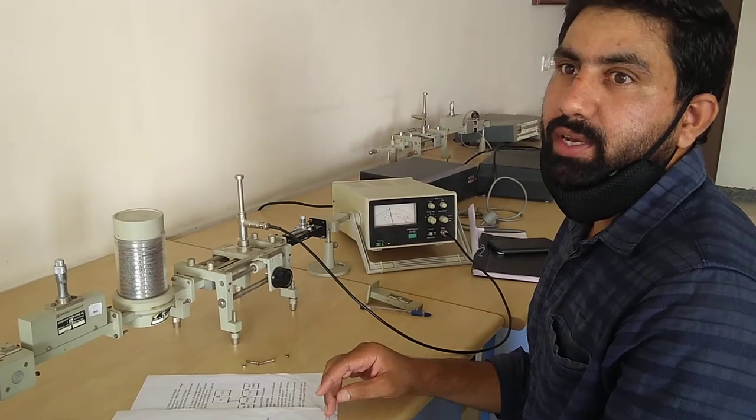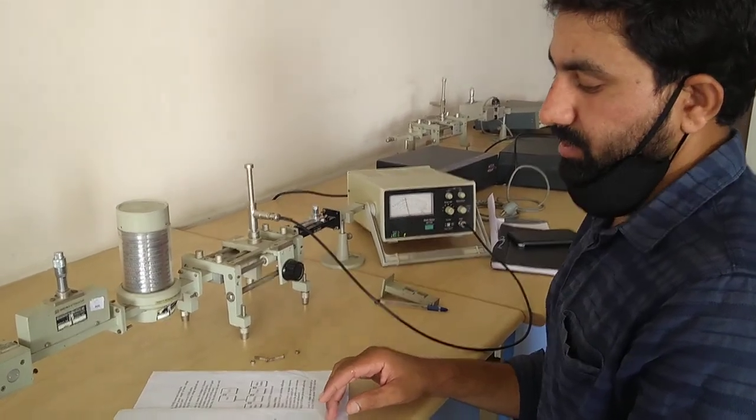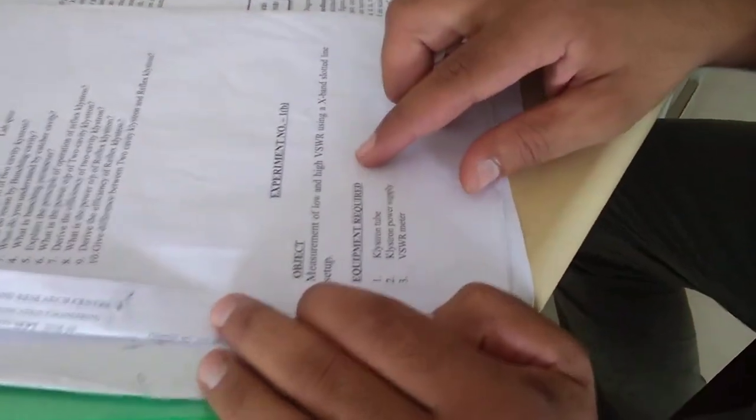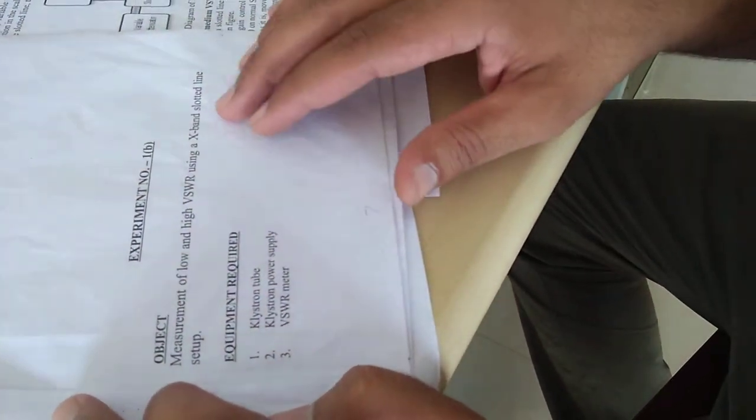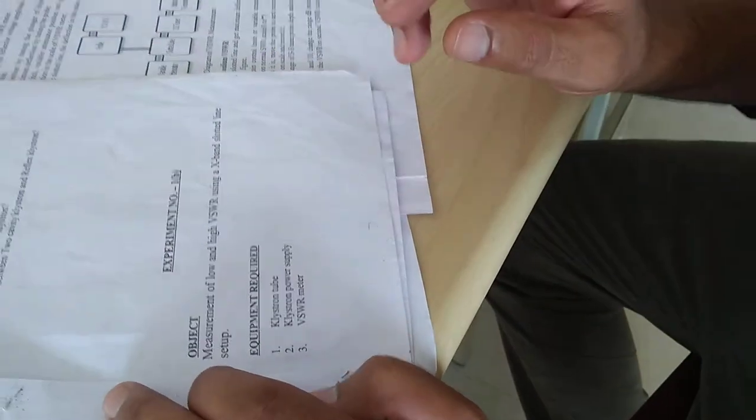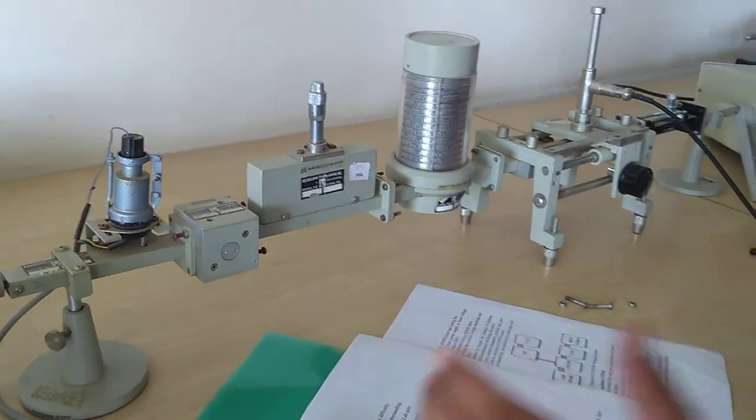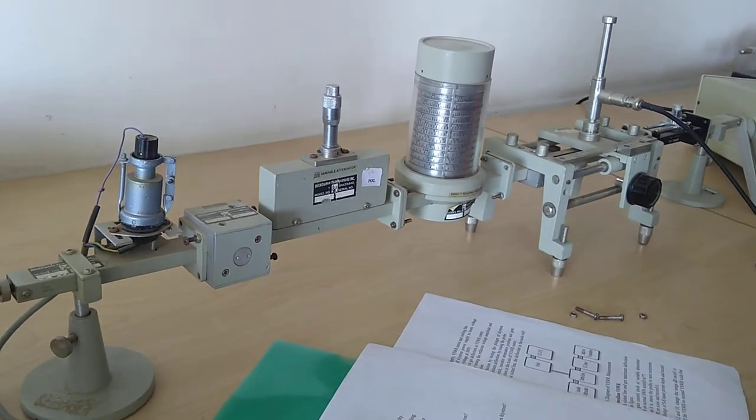Hello and welcome. Today we will discuss our first experiment, second part: measurement of low and high VHWR using X-band slotted line setup. We require equipment like calistron tube, calistron power supply,